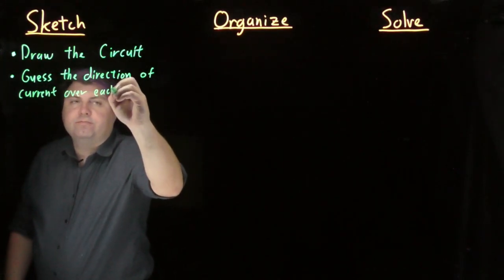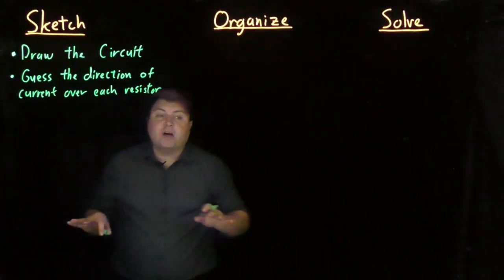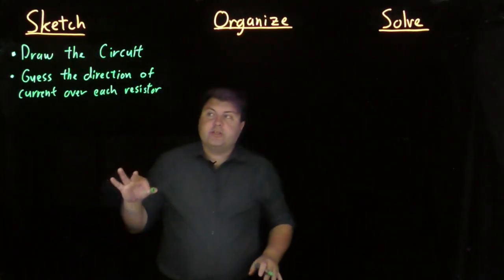Once we've done this, we want to make a guess for the direction of current over each resistor. This guess does not have to be correct. It just has to be made.